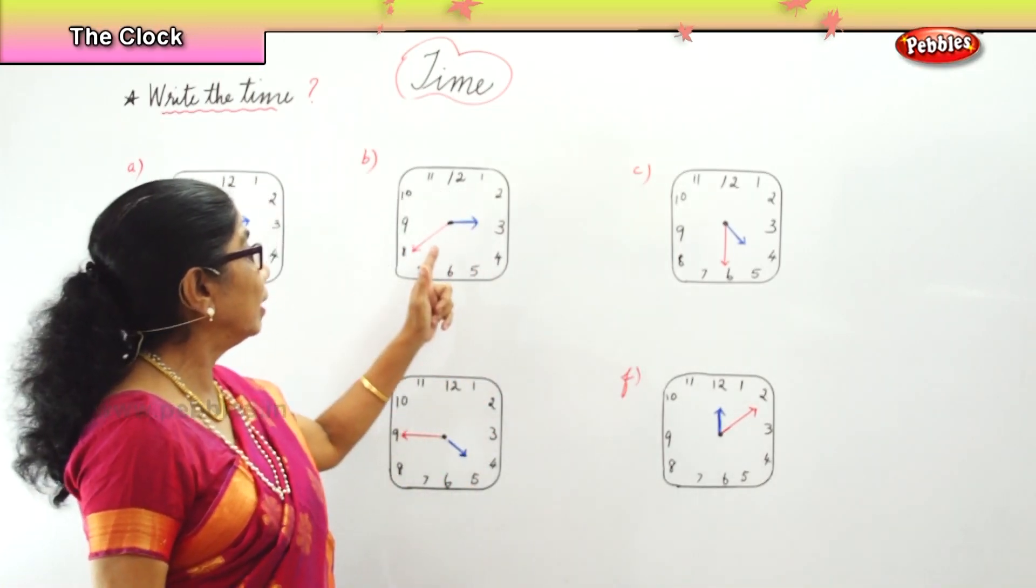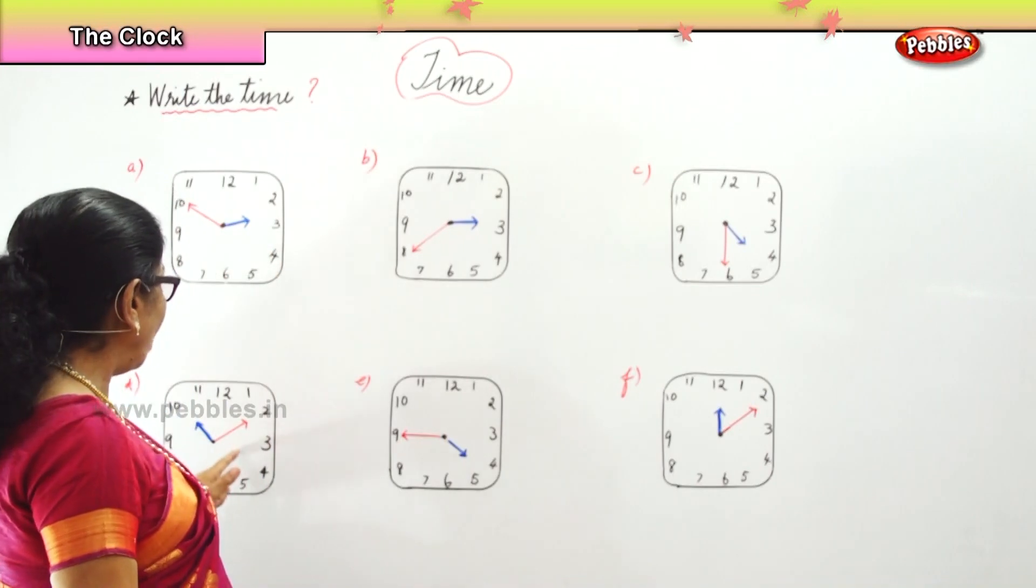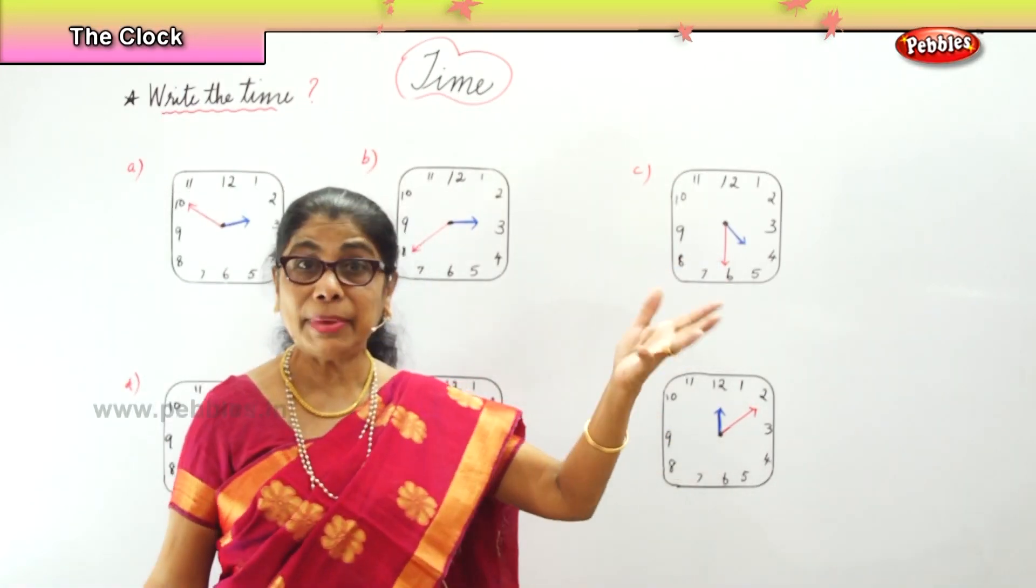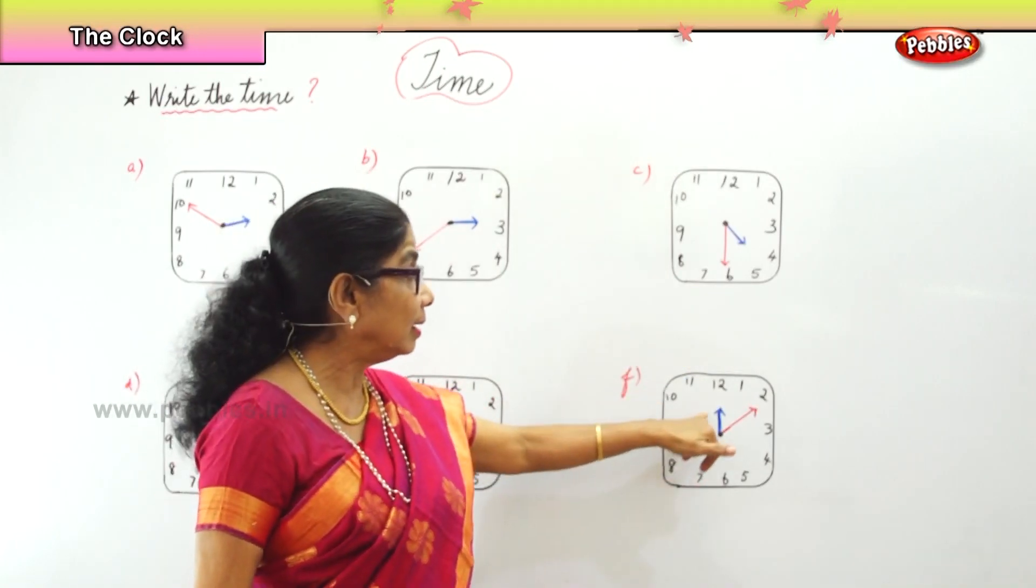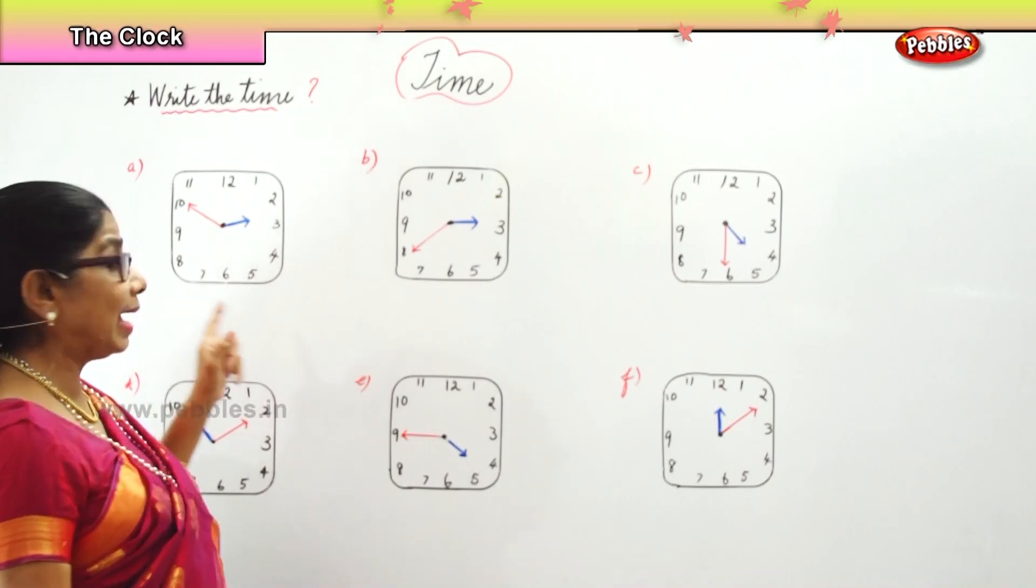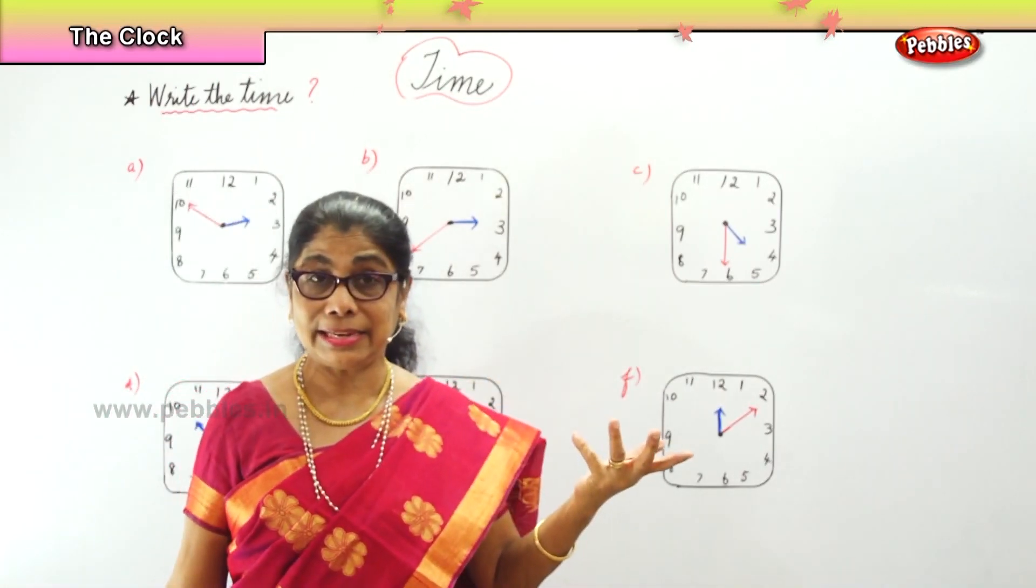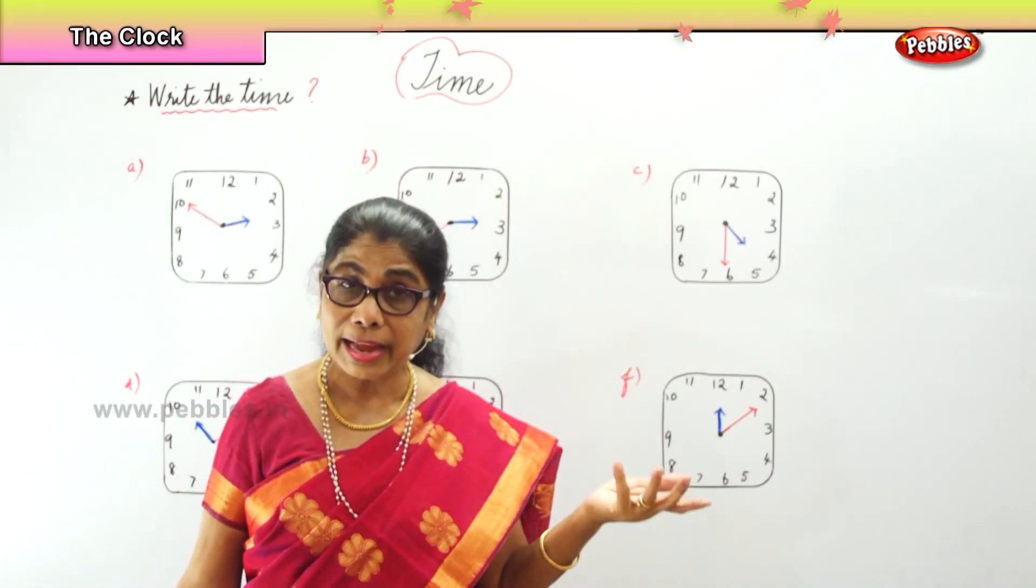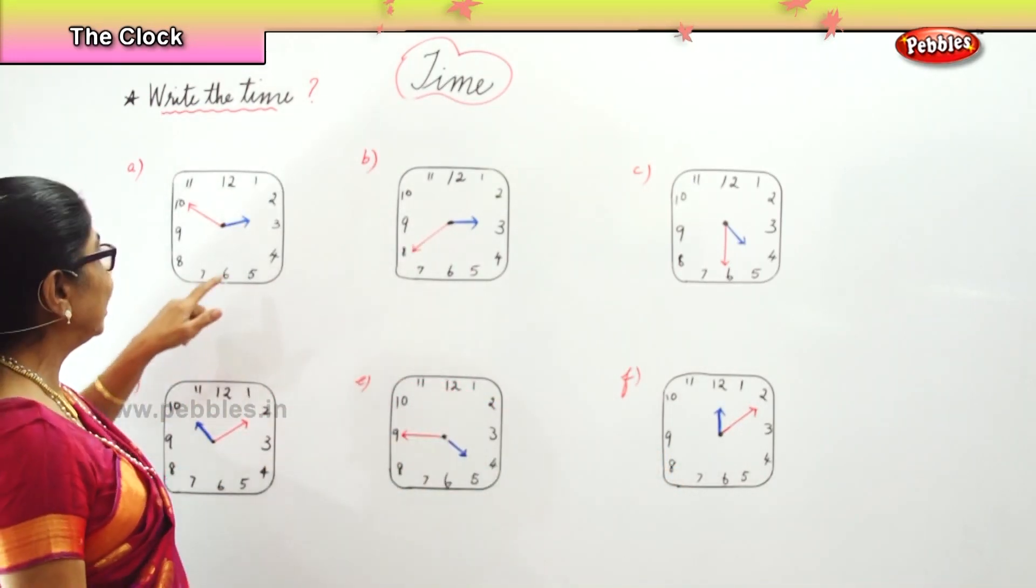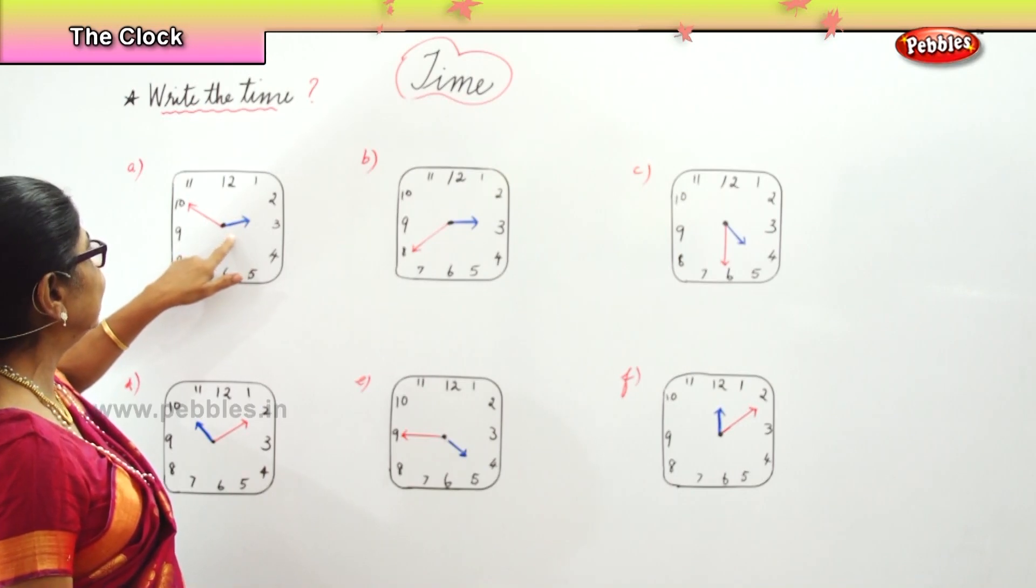The red long hands tell us how many minutes. The blue short hands are the hour hand and it will tell us the time. So looking at the hour hand and the minute hand, we'll have to write the time. Now here it is.